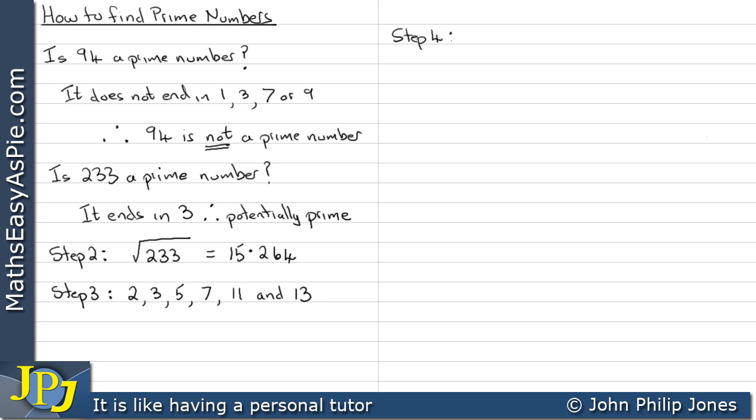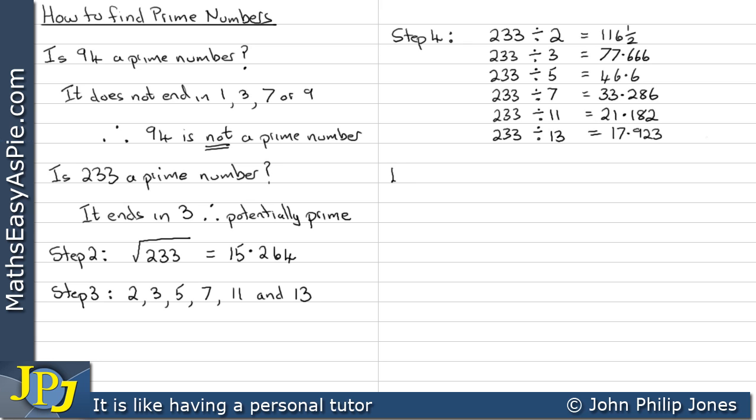Step 4. We divide 233 by every prime number. We can see that when I divide it by 2 I get an answer with a fraction. When I divide by 3 I get an answer with a fraction. Divide by 5 we get another answer with a fraction in it. Likewise when I divide by 7 then I divide by 11 I get a fraction in the answer and when I divide by 13 I also get a fraction in the answer. Every division gave a fraction in the result. Therefore 233 is a prime number.